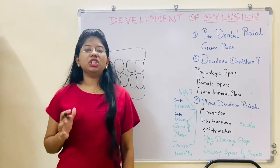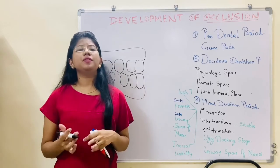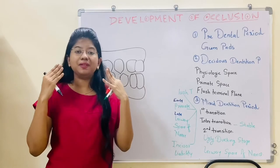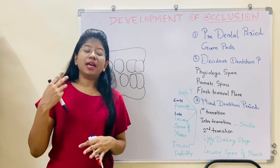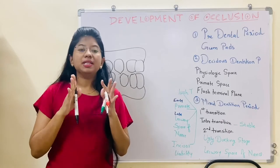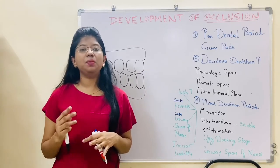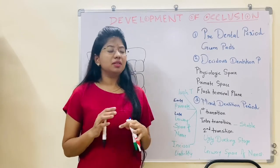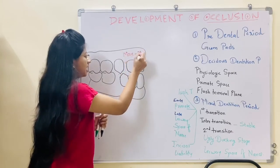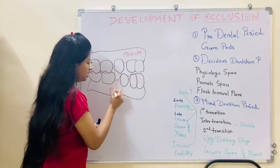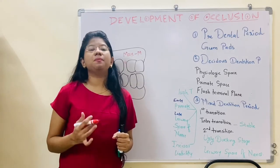In the deciduous dentition period, we will learn about physiological spaces, primate space, and the flush terminal plane. In the deciduous dentition there are spaces present between the teeth called physiological spaces or developmental spaces. These spaces help the permanent teeth to erupt in proper alignment; if the space is not present, it may lead to crowding. Primate space is a space present mesial to the maxillary canine and distal to the mandibular canine.